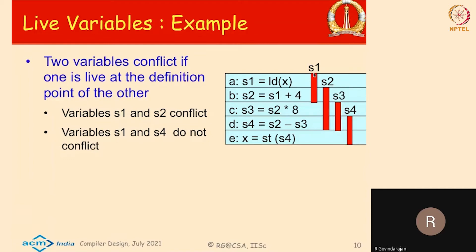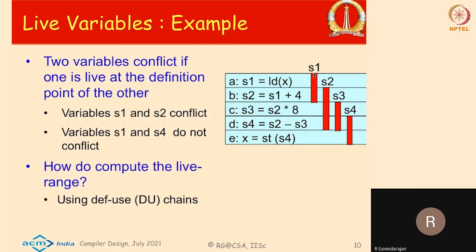S1 and S2, or S2 and S3, conflict with each other — as does S3 and S4. How do you compute the live range? You basically compute what are called def-use chains, and from there you compute the live range.